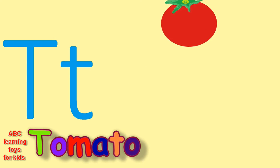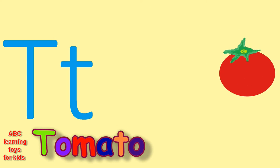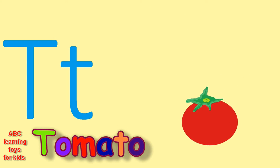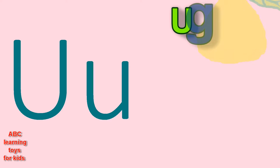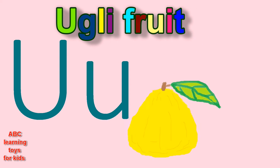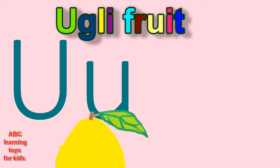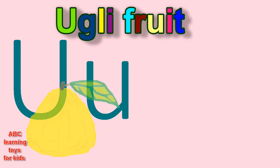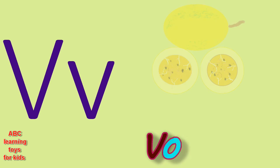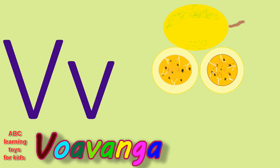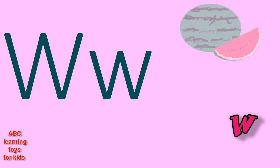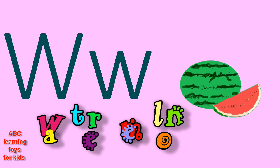T is for tomato. Tomato. U is for ugly fruit. V is for vovanga. Vovanga. W is for watermelon.